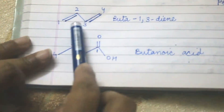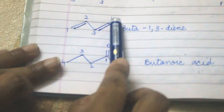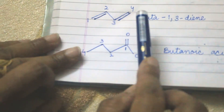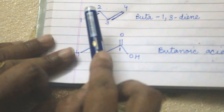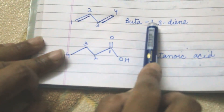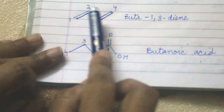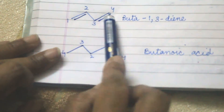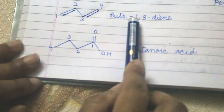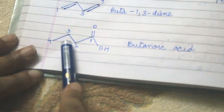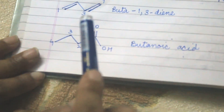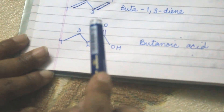Here there are four corners and two double bonds. The double bonds are at the first and third positions, so we mention those positions. Since there are two double bonds we use 'di', so the name is buta-1,3-diene. The next structure has a COOH group, so we number from there, giving the name butanoic acid.